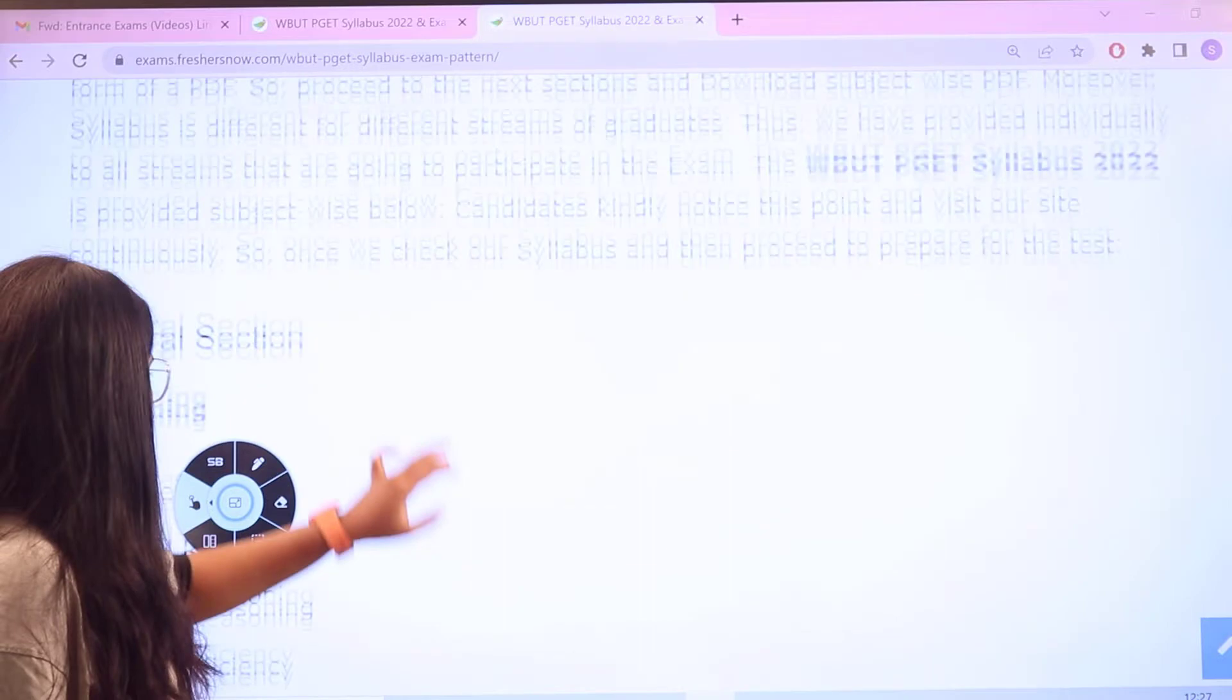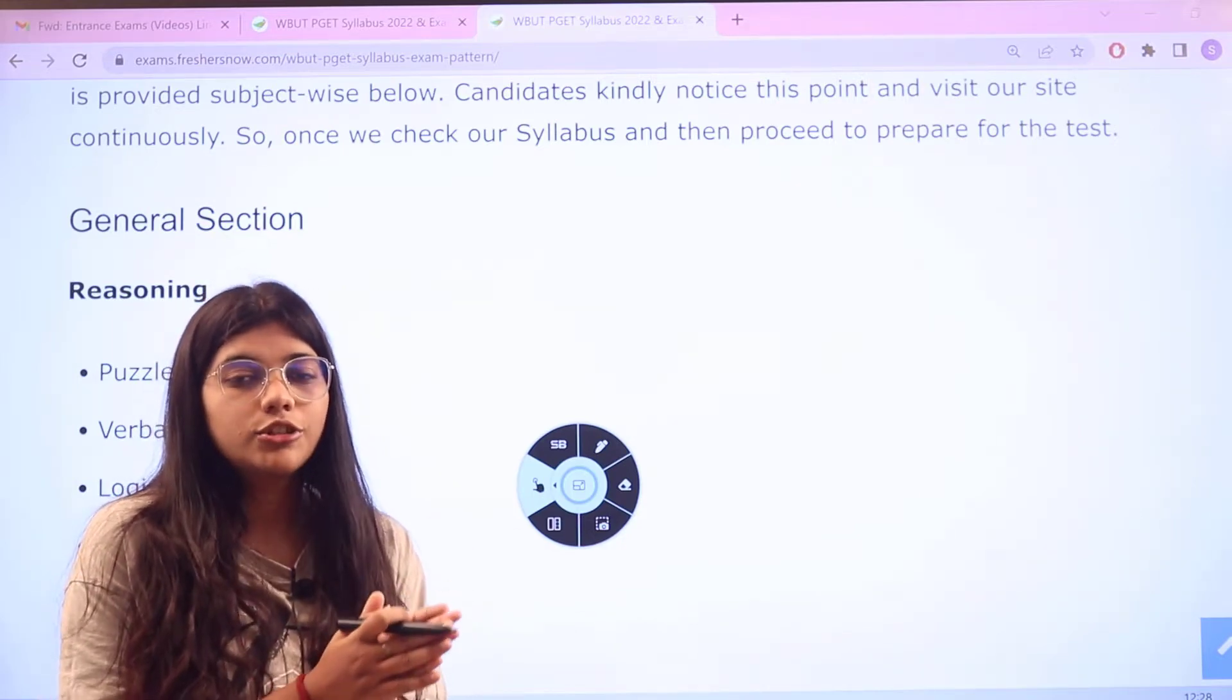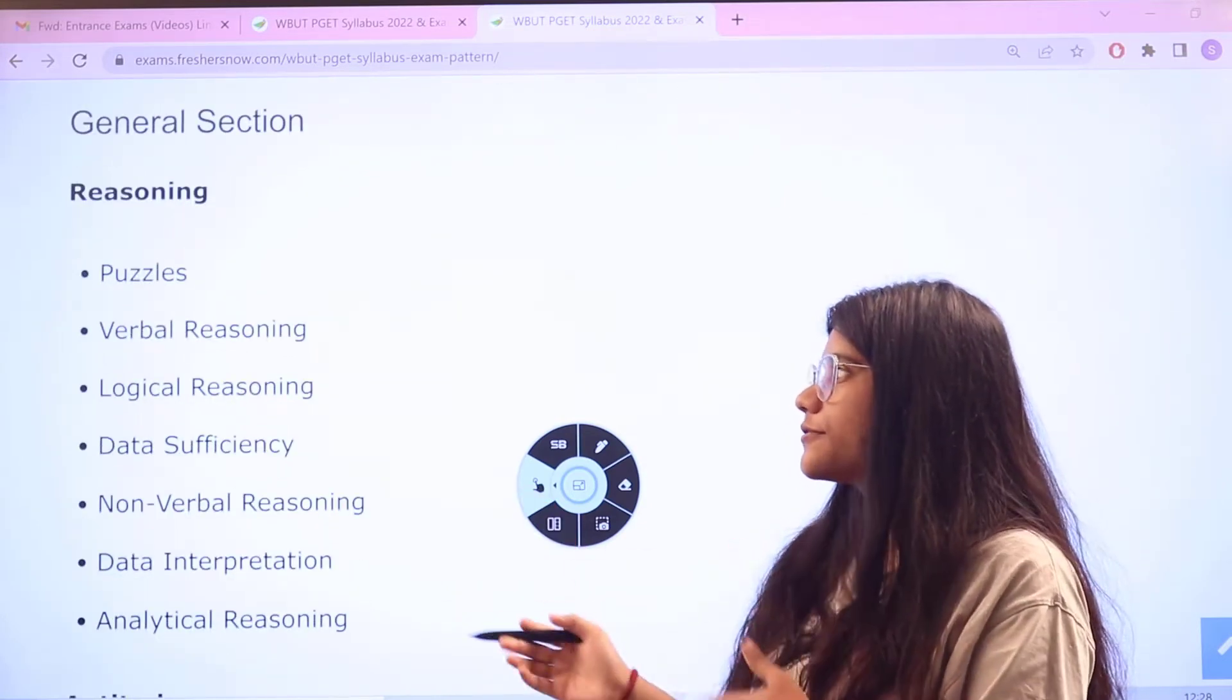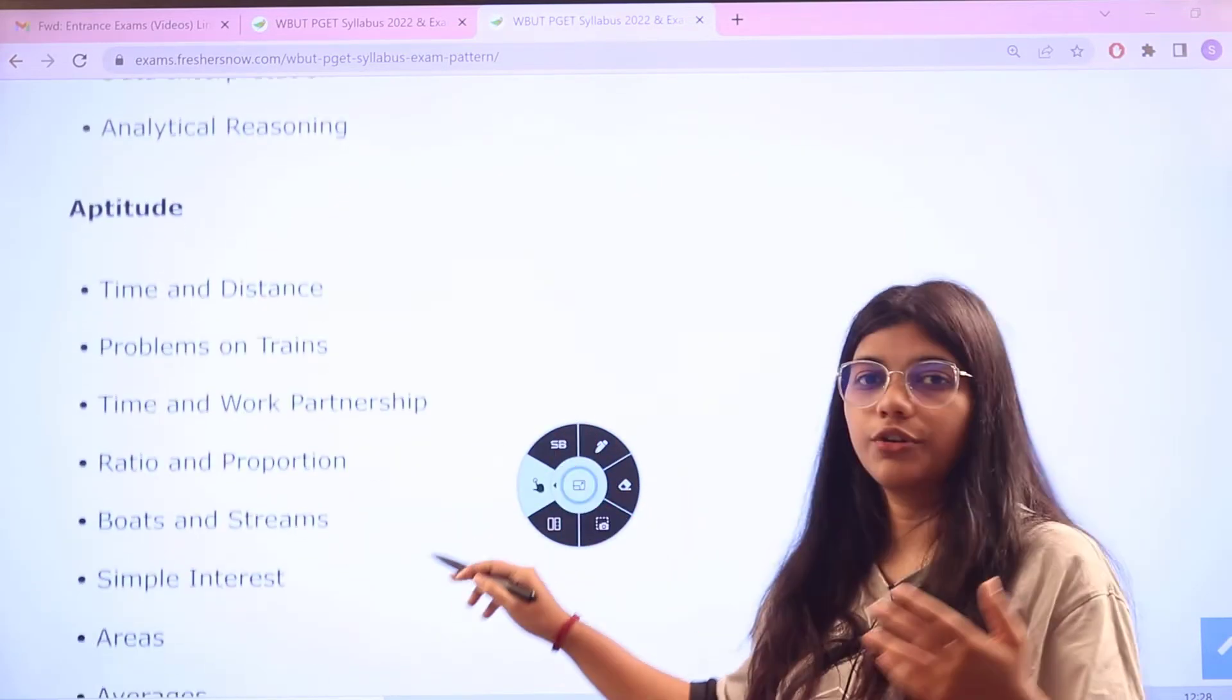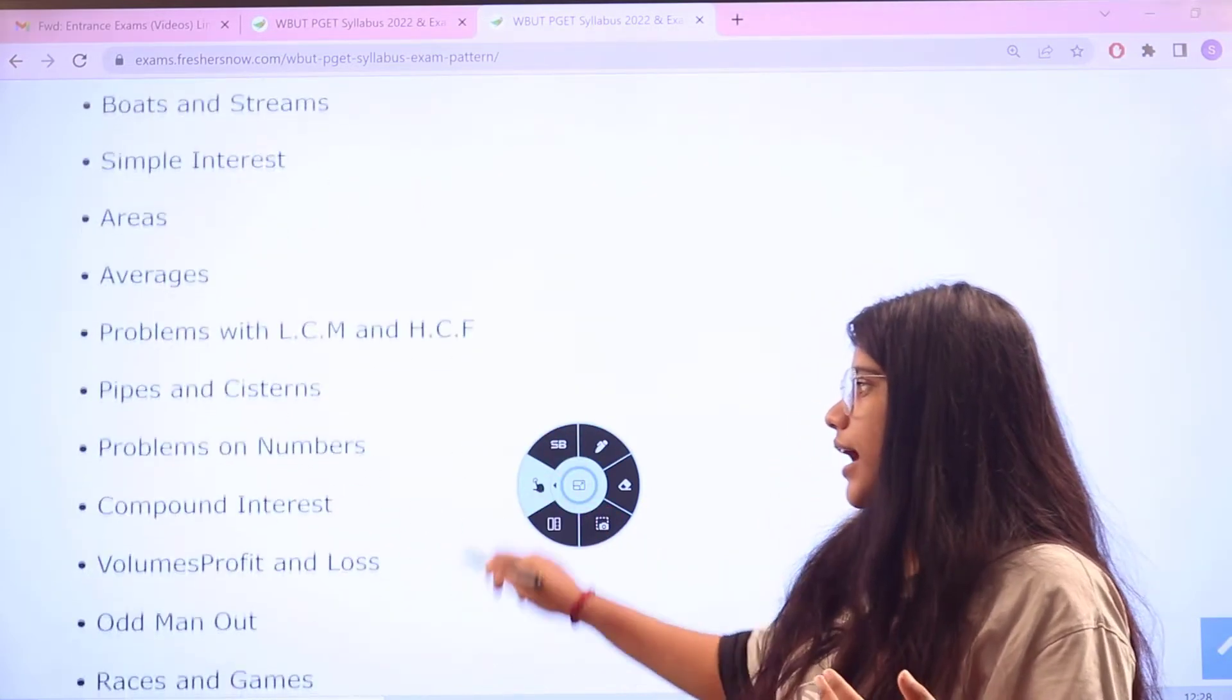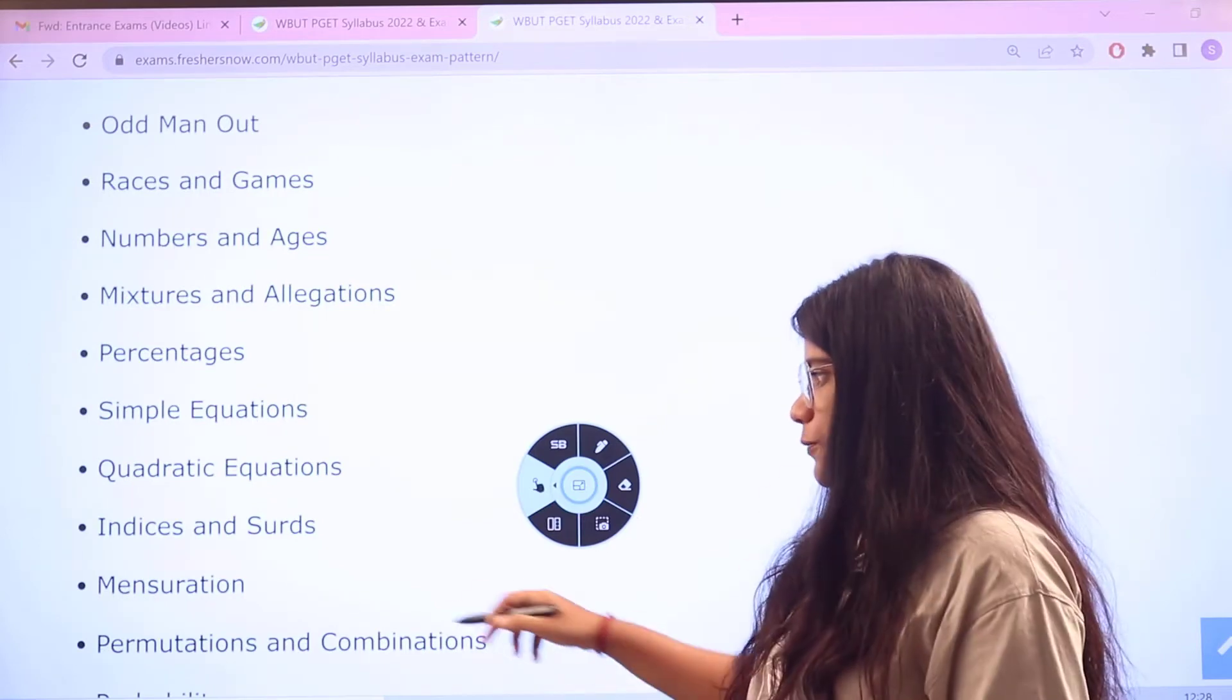Now the syllabus part. Apart from knowing your basics or covering all of the fundamentals of the particular concept, you should be actually focusing on the advanced level of the concept as well. We would be starting with the reasoning section. For reasoning, you have to be working on logical reasoning, data sufficiency, puzzles, non-verbal reasoning, and data interpretation and critical reasoning. For aptitude, you have time and distance, problems on trains, time work, partnership, ratio and proportions, boats and streams, simple interest, areas, averages, and HCF and LCM problems. Problems with pipes and cisterns, problems on numbers, volumes, profit and loss, odd man out, races and games, numbers and ages, percentages, simple equations, quadratic equations, mensurations, probabilities, simplifications, and approximations.